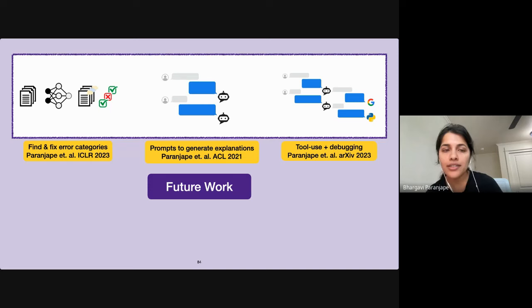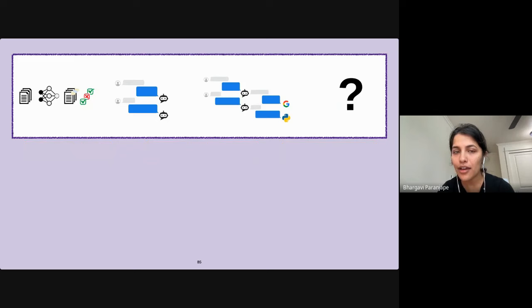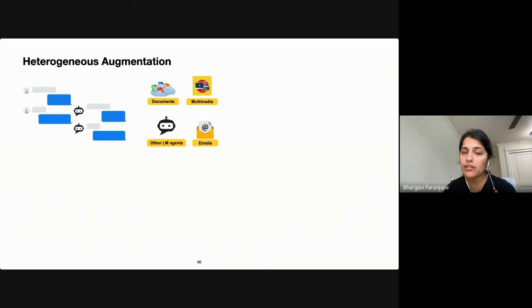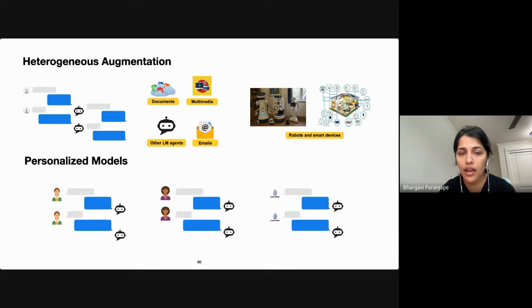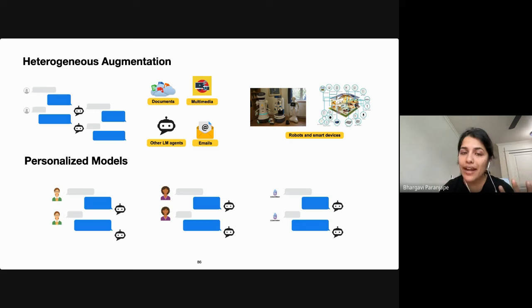So far I've covered work on building accurate, robust, and explainable language models. I want to discuss some ongoing and future directions. The interactive capabilities of models have grown massively in the last year, and this growth will continue. We're soon going to see models interacting with other agents — other language models, cloud data, emails, multimedia, and potentially physical agents like robots or smart devices. Models are also going to become increasingly personalized, tailored to particular individuals or organizations.